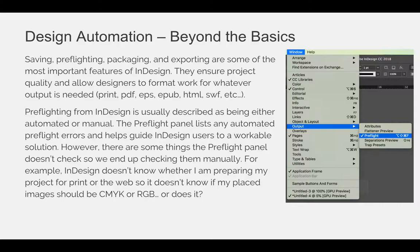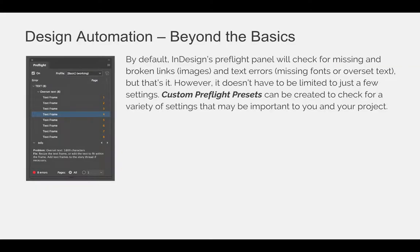For example, InDesign doesn't know whether I'm preparing my project for print or for the web, so it doesn't know if my placed images should be CMYK or RGB. By default, InDesign's preflight panel will check for missing and broken links — which we call images — and text errors, which are missing fonts or overset text, but that's it.